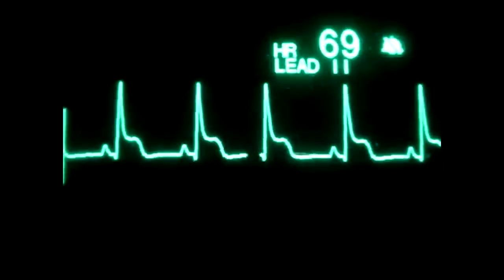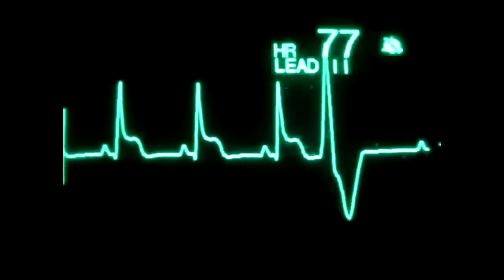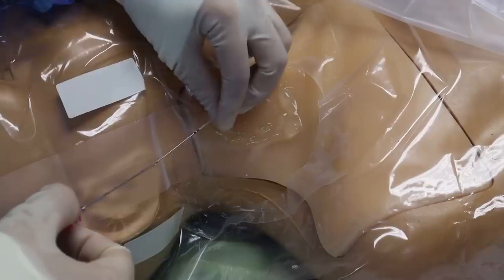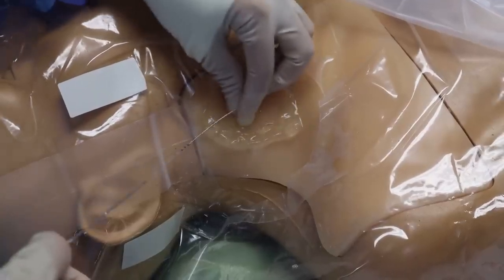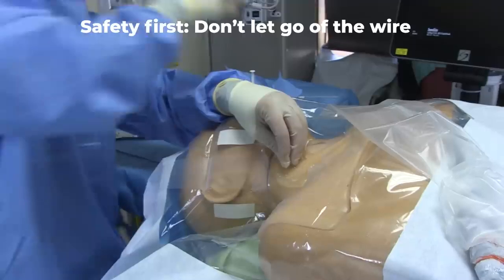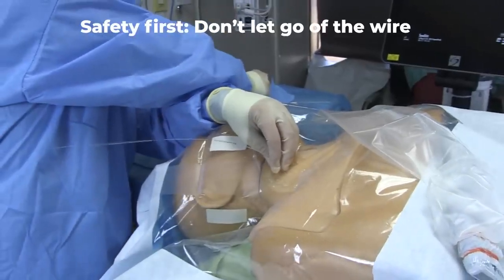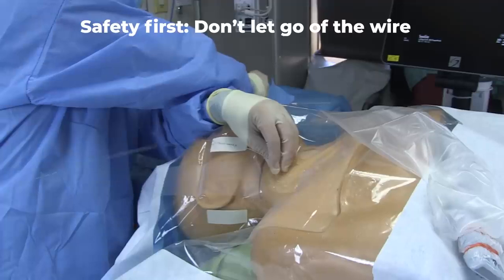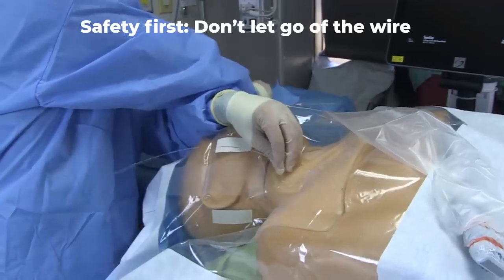And as you advance, watch the monitors for signs of ectopy. If you see that, then you are too deep and you should withdraw the wire a couple centimeters. From here on out, one hand should always be controlling the wire until it is out of the body. Otherwise, there is the rare chance it gets totally sucked into the vein and that will be an embarrassing call to vascular or cardiothoracic surgery.